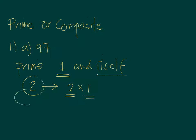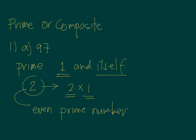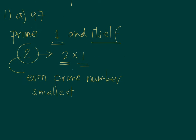Two is the only even prime number. The rest of the prime numbers are odd numbers. Two is the smallest prime number, and it is also the only even prime number.